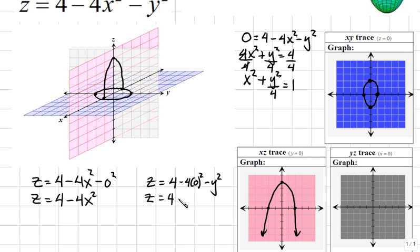This again is a parabola where the vertex will be 4 units up, but this time it's crossing the y-axis at positive 2 and negative 2. So this will be a slightly thinner parabola pointing downwards. So in our quadratic surface graph, in the yz-trace or the yz-plane, it will cross here and here.